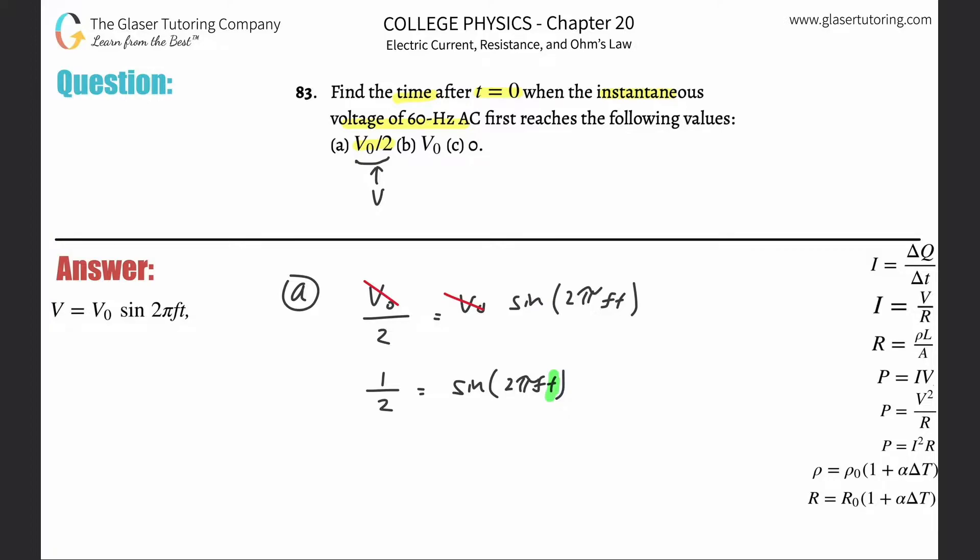So sine inverse of one half. That will equal then inverse sine of sine 2 pi f t. Now notice the signs just go by by. They cancel. And then what you need to now do is you have to take then the inverse sine of one half.